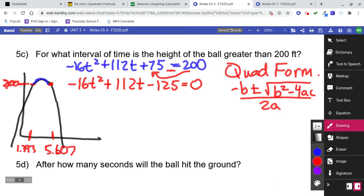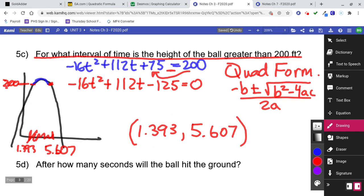So that's the interval of time between there. For what interval of time is the height of the ball greater than 200 feet? We would say parentheses 1.393 because we don't want it equal. We don't want to equal those two numbers because if we equal 1.393, we would equal 200 feet and we want to be greater than. So in between those two numbers, that's the interval we're looking at.